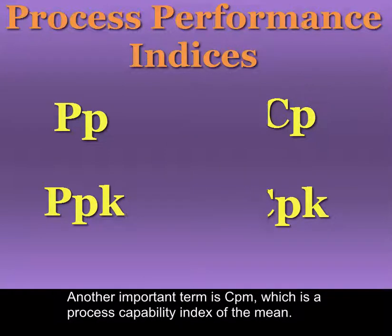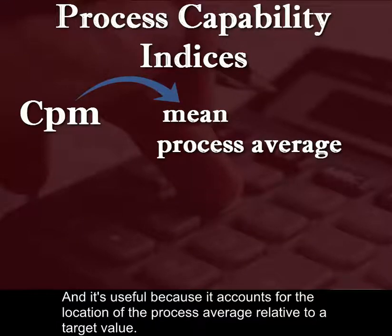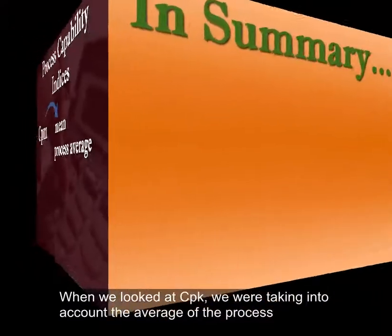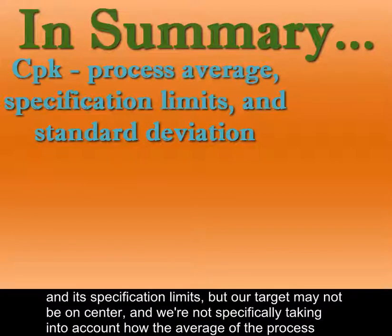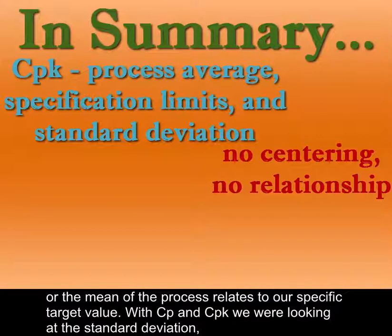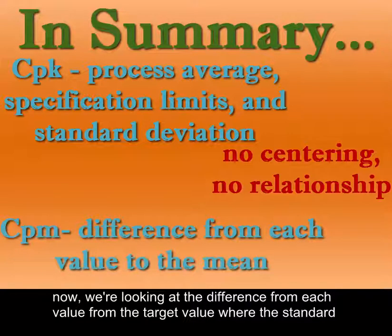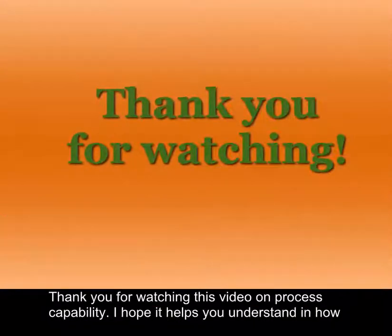Another important term is CPM, which is the process capability index of the mean. It's useful because it accounts for the location of the process average relative to a target value. When we looked at CPK, we were taking into account the process average and the specification limits, but our target may not be centered, and we're not specifically taking into account how the process mean relates to our specific target value. With CPM, instead of looking at the standard deviation from the mean, we're looking at the difference of each value from the target value. Thank you for watching this video on process capability — I hope it helps you in understanding how to use process capability to improve your processes.